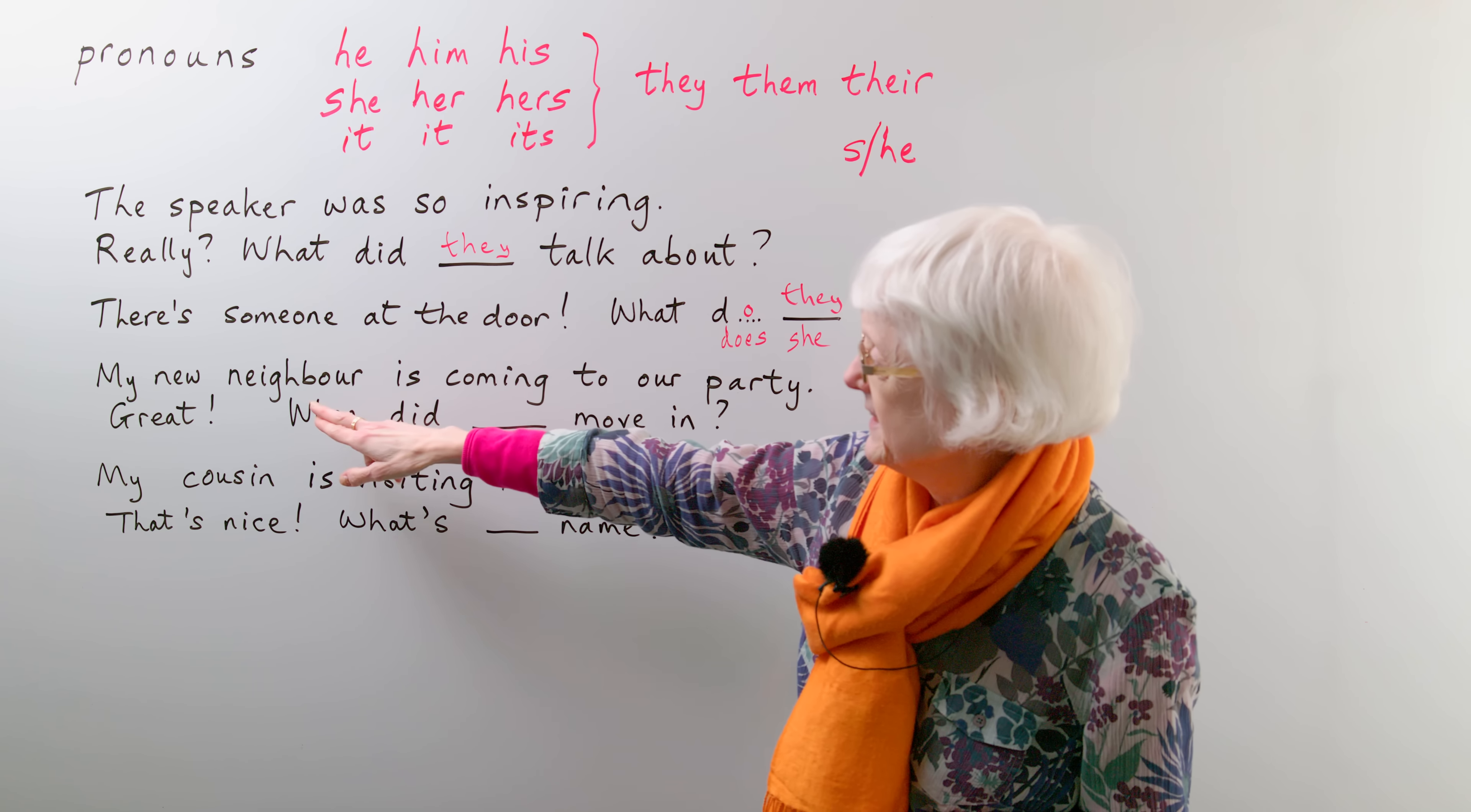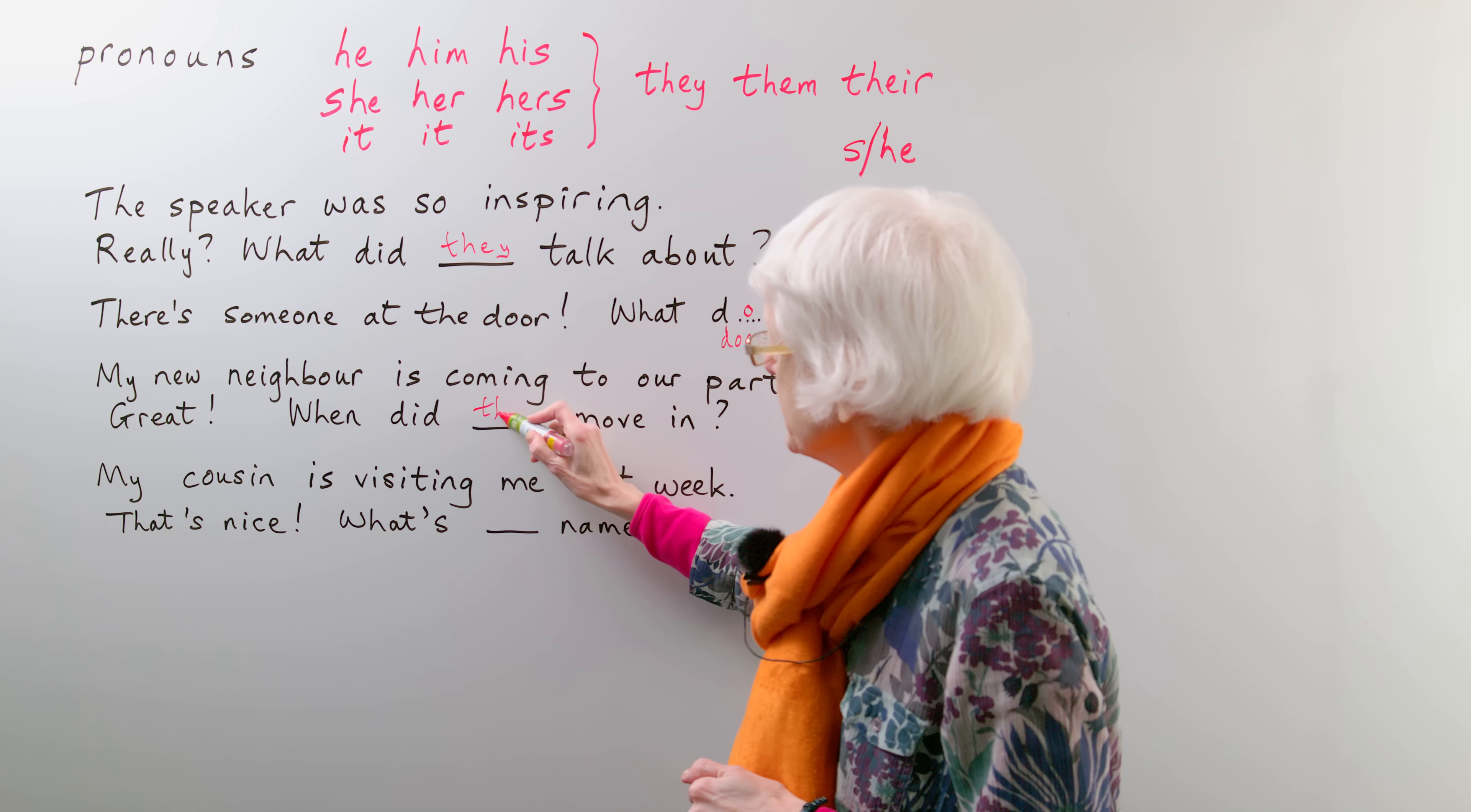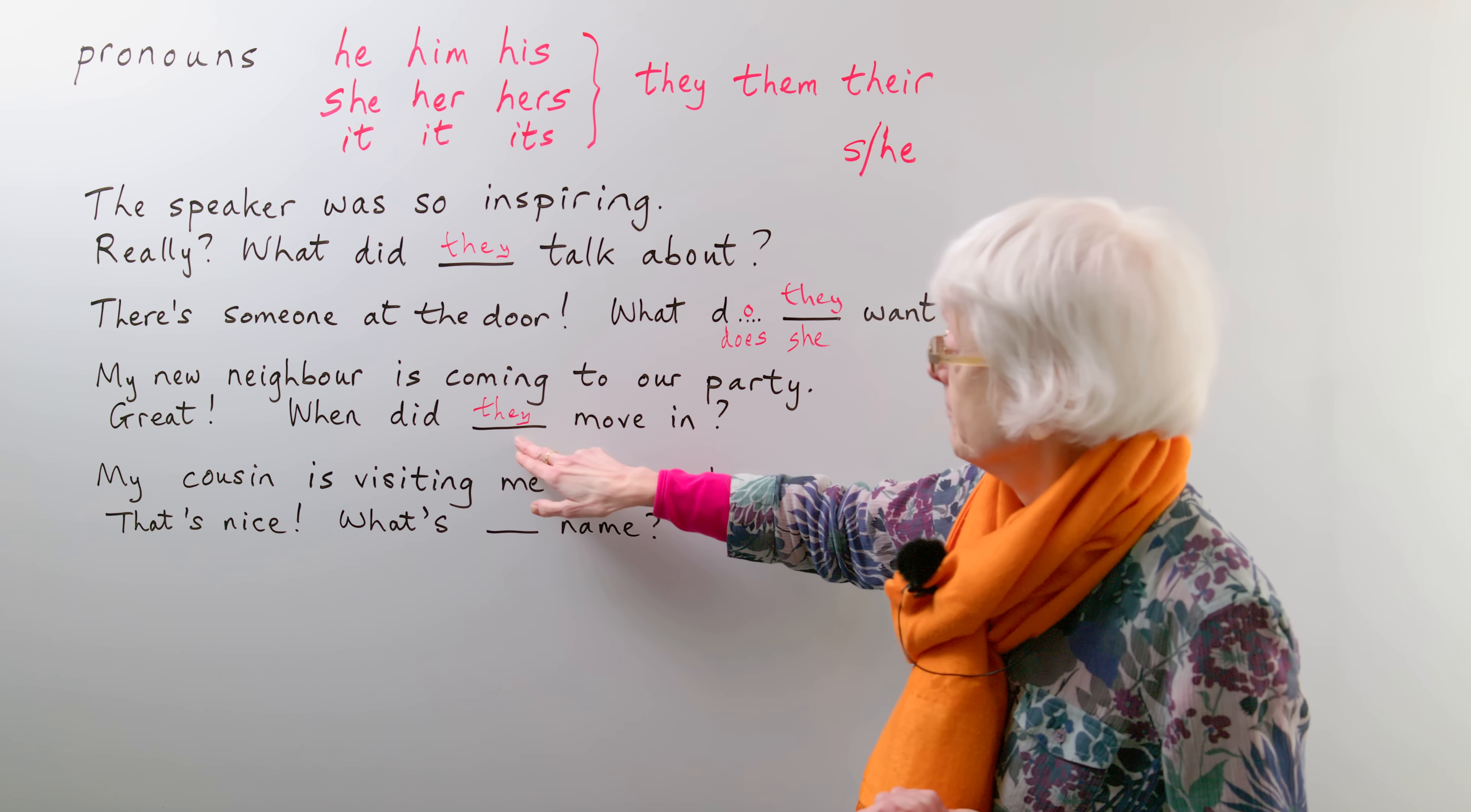And then here's another. My new neighbor is coming to our party. Then someone replies, great, when did... move in, the new neighbor, moving in next door. When did... well, again, it's they, isn't it? When did they move in? But then once you know, you can say, oh, when did he move in? When did she move in? And there's no change to the verb form here because it's a more straightforward, and it's the past form of do, so did stays the same.